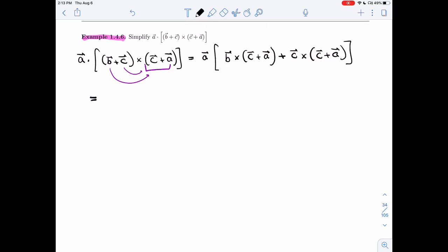So I will get, I forgot the dot here. Be careful with these things. This will cost you a little penalties every time. So here I'm going to distribute the B in and the C in. So I will get B cross C plus B cross A plus C cross C plus C cross A.